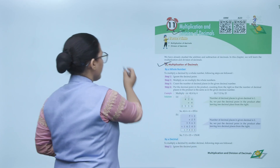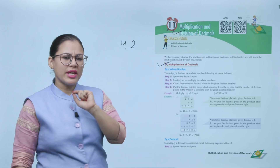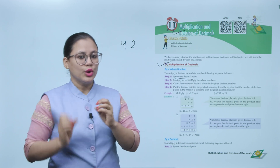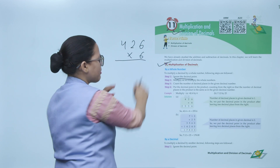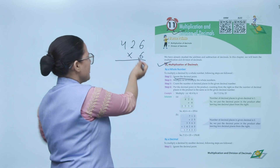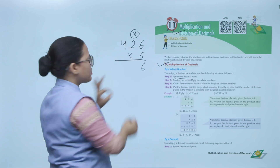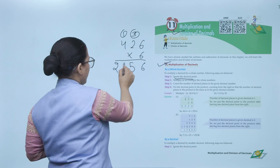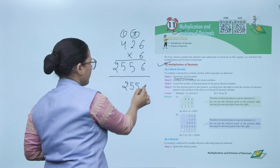Now let's understand all these steps through an example. You have to multiply 42.6. In step 1, we ignore the decimal point. So we write 426 multiplied by 6, and multiply as we do with whole numbers: 6×6=36, carry 3; 6×2=12+3=15, carry 1; 6×4=24+1=25. So the product is 2556.